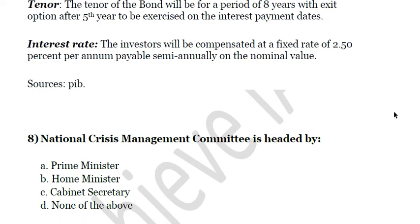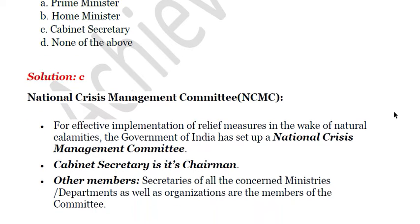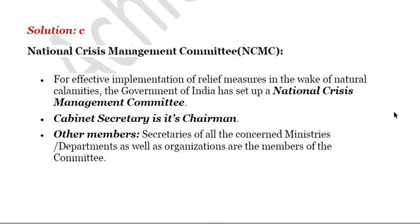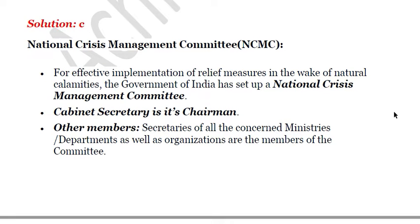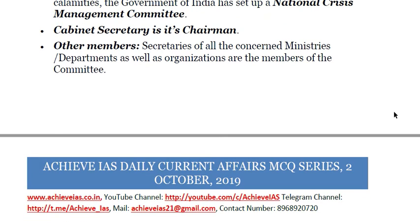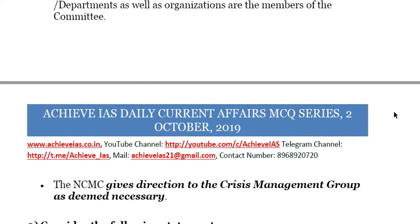The next question: the National Crisis Management Committee is headed by — A) Prime Minister, B) Home Minister, C) Cabinet Secretary, D) None of the above. The answer is the Cabinet Secretary. This committee was set up for effective implementation of relief measures in the wake of natural calamities. The Cabinet Secretary is its chairman, and other members include secretaries of all concerned ministries, departments, and organizations.